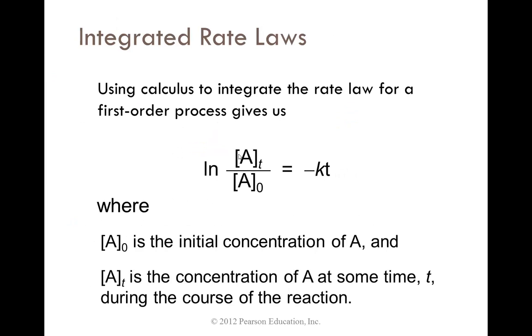Using calculus to integrate the rate law for a first-order process gives you the natural log of the concentration of A at any time over the initial concentration of A equals negative the rate constant times time. Where A naught is the initial concentration of A, and A_t is the concentration of A at some time t during the course of the reaction.